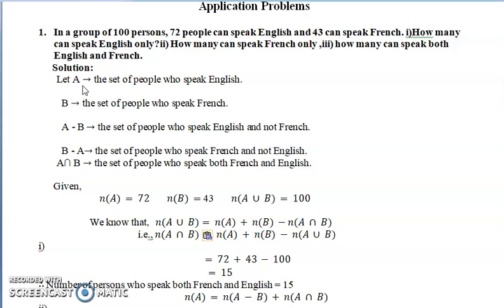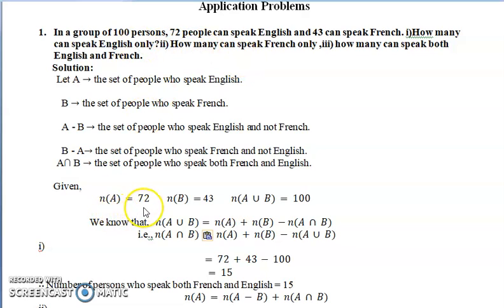So A will be the set of people who speak English, and B is the set of people who speak French. A minus B is the set of people who speak English but not French. B minus A is the set of people who speak French but not English — I hope you remember what is the difference of two sets from our previous classes. A∩B is nothing but the people who speak both French and English.